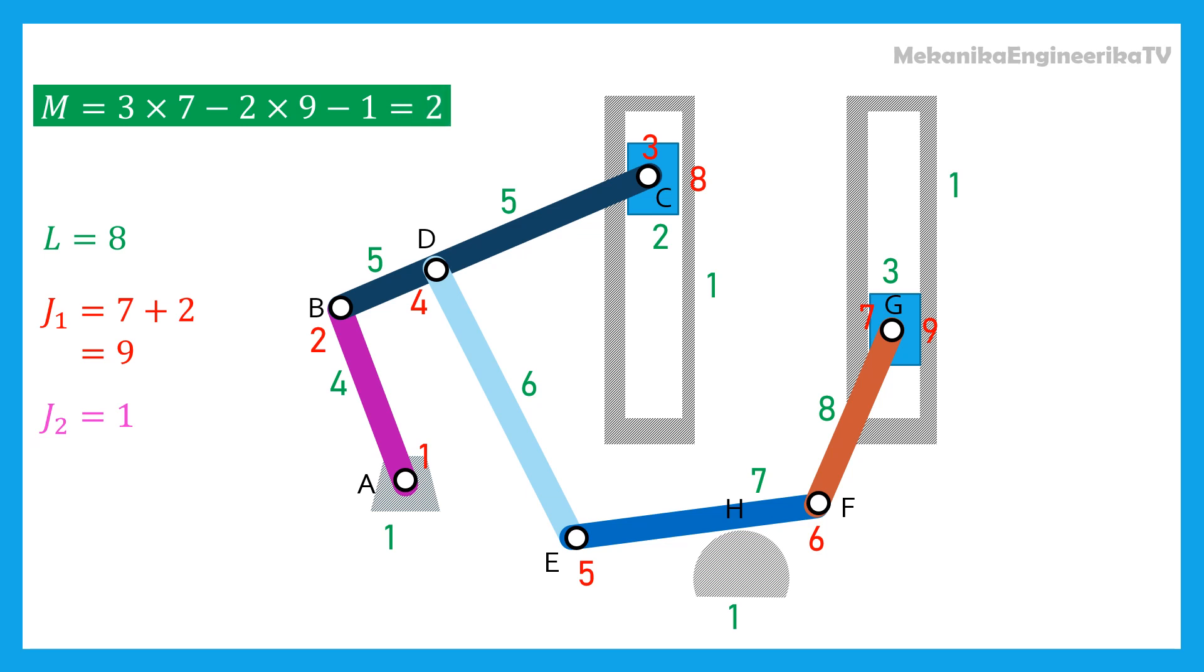The mobility of this mechanism is then equal to 2. The mechanism requires two inputs. For example, it is possible to control, independently, the two sliders.